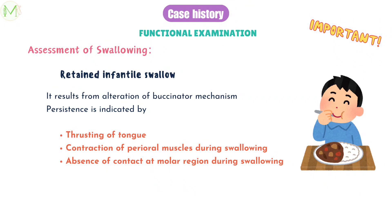There are cases where infantile swallow is retained — called retained infantile swallow. It results from alteration of the buccinator mechanism. Signs include tongue thrusting, contraction of perioral muscles during swallowing, and no contact between the molar teeth during swallowing.